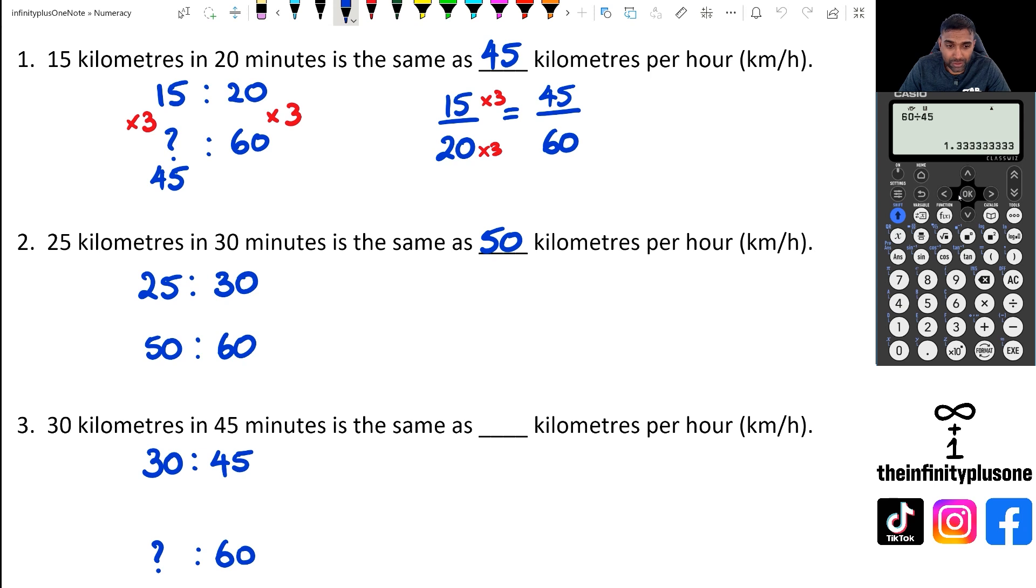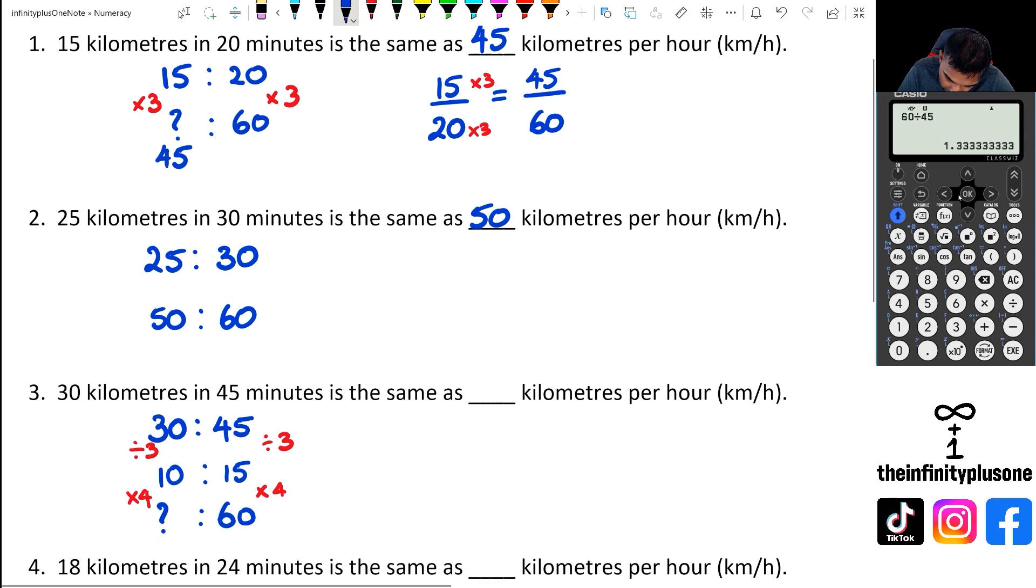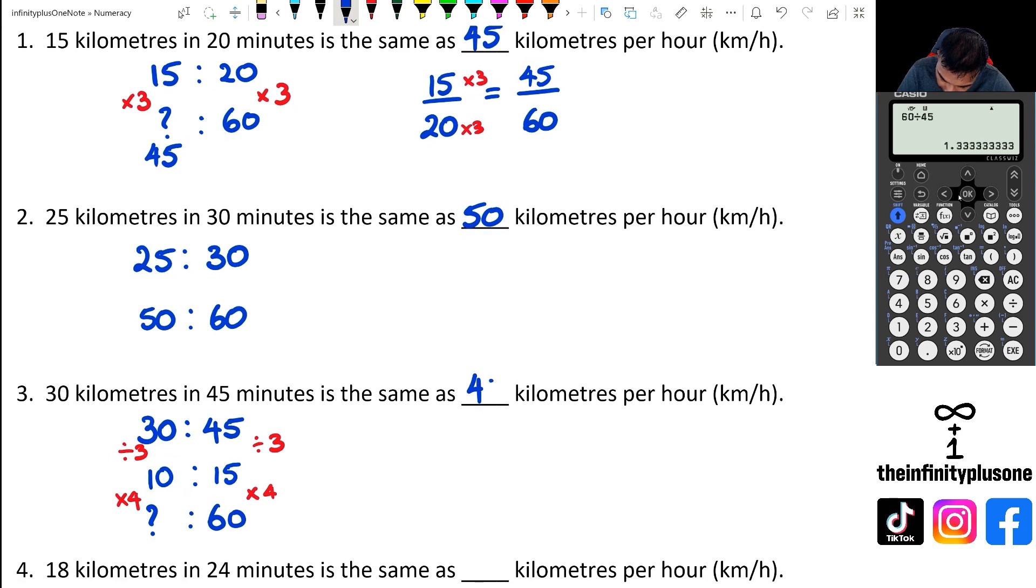What if we change that 45 minutes into 15 minutes. And the way we're going to do that is we're going to divide 45 by three, and we're going to do 30 divided by three. And when we do that, 30 divided by three is 10, and 45 divided by three is 15. But now I also know that 15 times four is 60. So I know that 15 times four is 60, which means on the other side, I've also got to do 10 times four, which is going to give me a final answer of 40.